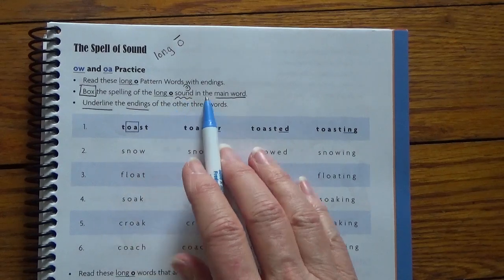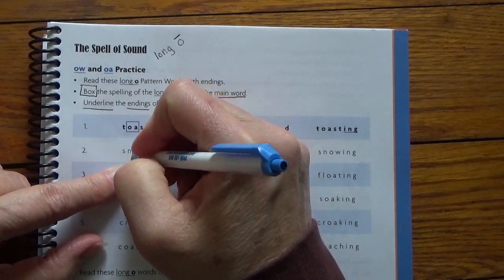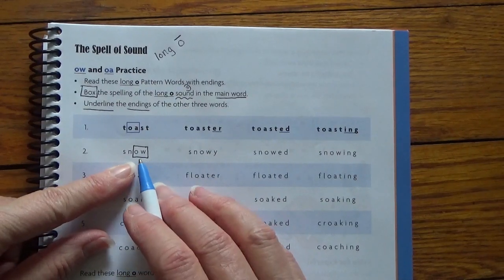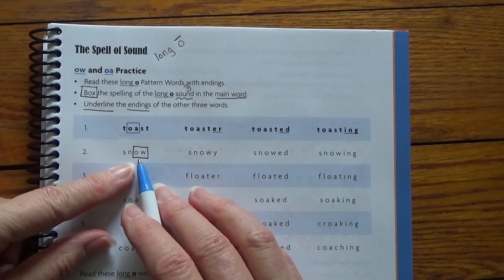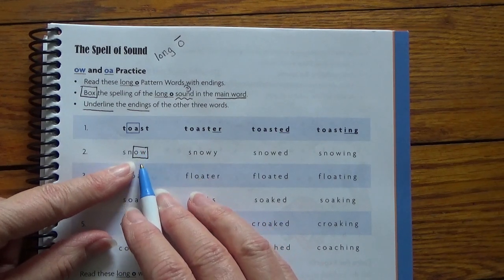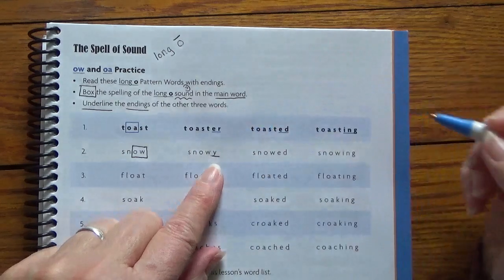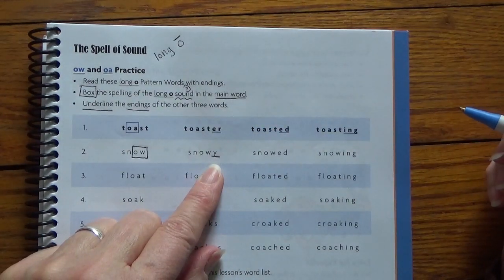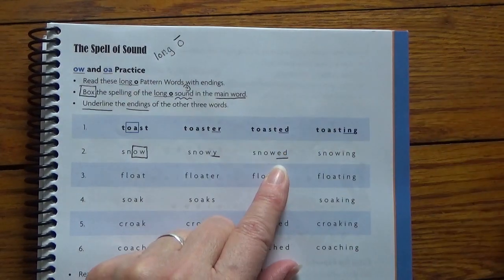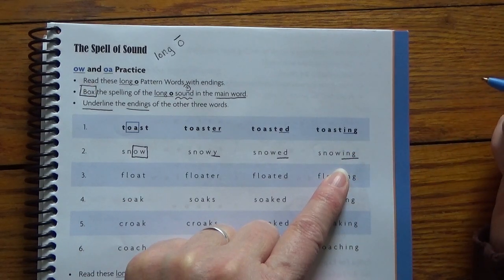I think I can handle this. Box the spelling of the long O sound in the main word. They did one for us. So we can do this. Snow. So I'm going to box in snow. The W goes with the O as part of that vowel pair. It's not just the O, because it's not snow-a, it's just snow. So O-W is part of the vowel pair. And then I'm going to underline the Y. Snowy. We've had some snowy weather. It snowed on Sunday. It is snowing right now as I do these lessons.